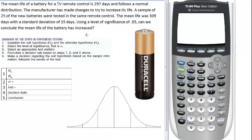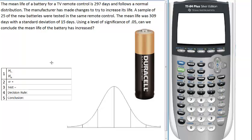In hypothesis testing, we normally follow a five-step process. Number one, establish the null hypothesis H0 and the alternate hypothesis H1. Select the level of significance, which is alpha. Select an appropriate test statistic. Number four, formulate a decision rule based on steps one, two, and three above. Five, make a decision regarding the null hypothesis based on sample information and interpret the results of the test.